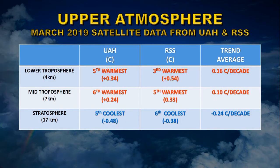Now let's take a look at the upper atmosphere. There are two main groups that do this: the University of Alabama Huntsville and Remote Sensing Systems. For the lower troposphere, which has an average altitude of about four kilometers, UAH found it was the fifth warmest with a positive temperature differential of 0.34 degrees centigrade. RSS found it was the third warmest with a temperature differential of 0.54 degrees centigrade. The average trend for the two groups was 0.16 degrees centigrade per decade, showing an overall warming over the last 40 years of 0.6 degrees centigrade.